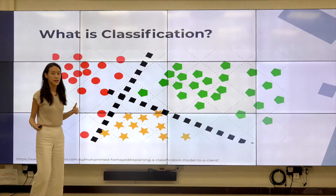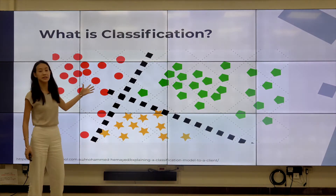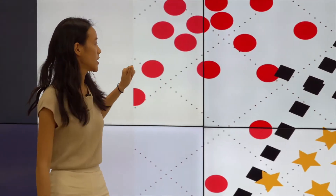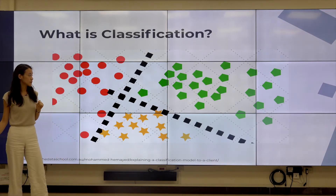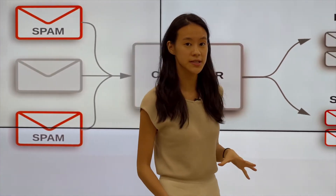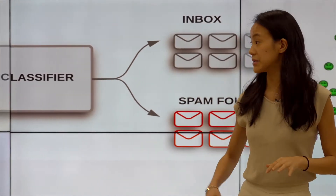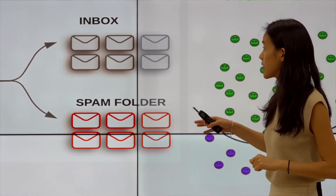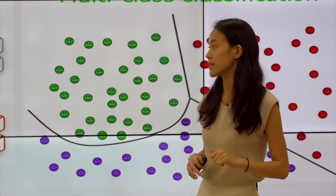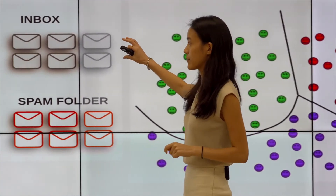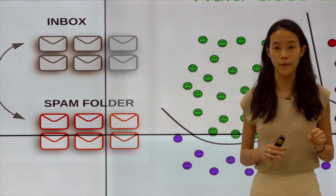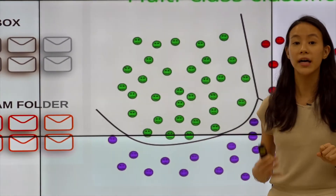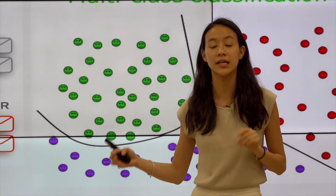Starting off, what is classification? In simple terms, it is exactly what you see on the board — we can classify different points into three different kinds of labels, in this case pentagons, circles, and stars. One common use is classifying an inbox: things that are important to us versus things in the spam folder. This is a simple binary classification — yes or no, one or two.